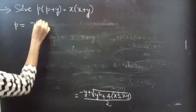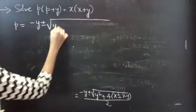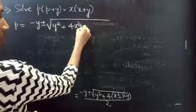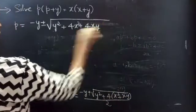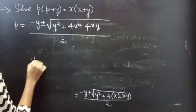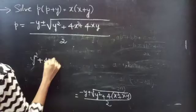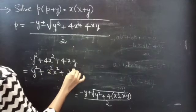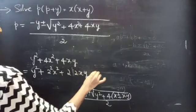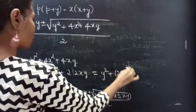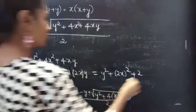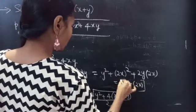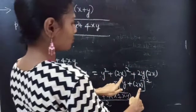We have P = (−Y ± √(Y² + 4(X² + XY))) / 2. So the discriminant is Y² + 4X² + 4XY. You can write this as Y² + (2X)² + 2 × 2 × X × Y.